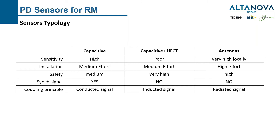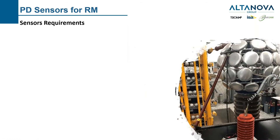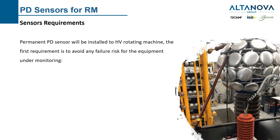One very important topic from my point of view as a testing engineer is the synchronization signal. As mentioned earlier, we build PD data in the PRPD pattern. In order to have phase resolution, we need a synchronization signal that is directly correlated to the applied voltage to the insulation. This signal is made available with capacitive couplers, but we don't have such a signal when using capacitive sensors plus an HFCT, or with antennas. The coupling principle is: conducted signal for capacitive sensors, inducted signal for passive sensors with a high frequency current transformer, and radiated signal with antennas.